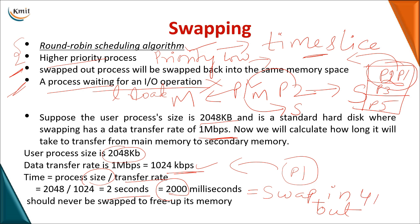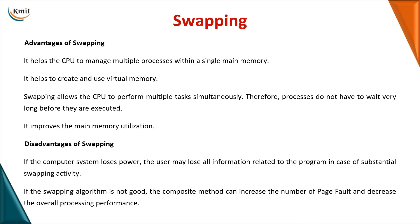For both swap-out and swap-in together, the total time is approximately 400 milliseconds. This shows that swapping does enhance multi-programming, but some amount of CPU time is wasted in transferring data.